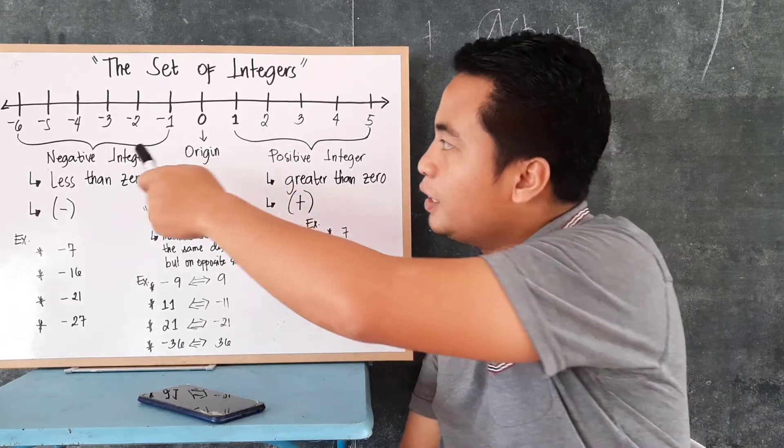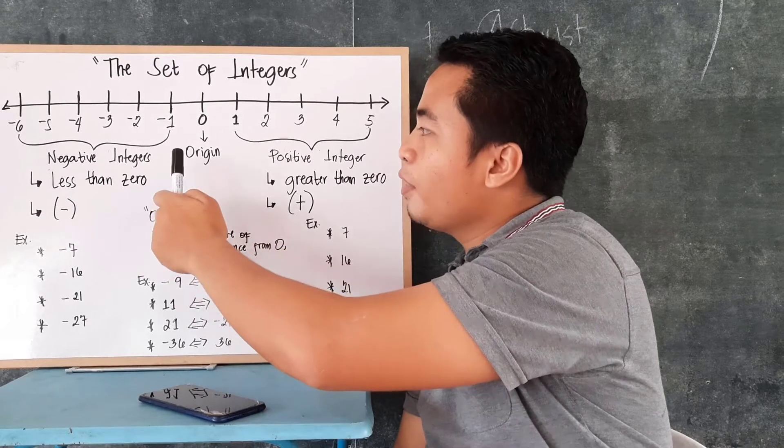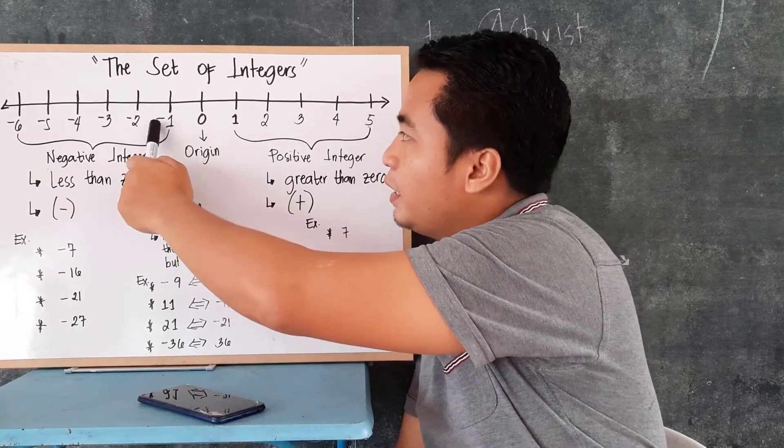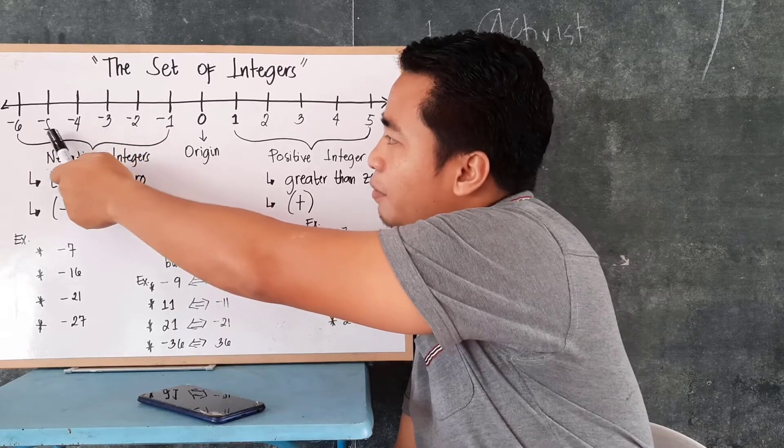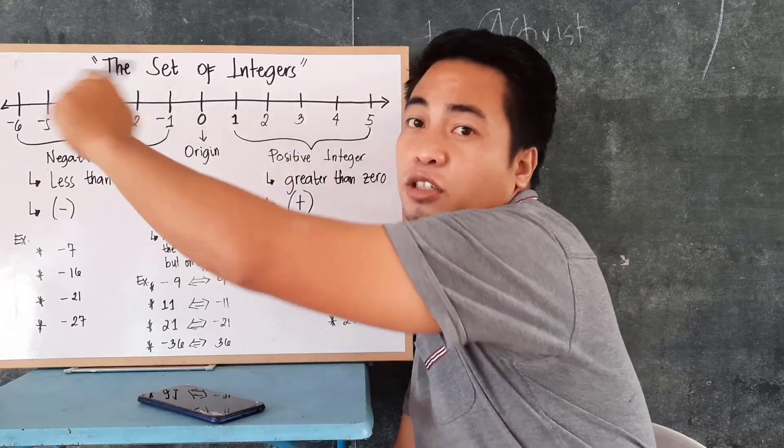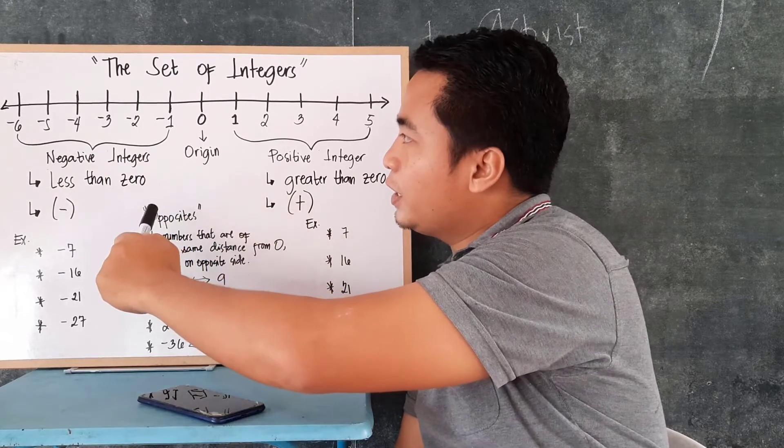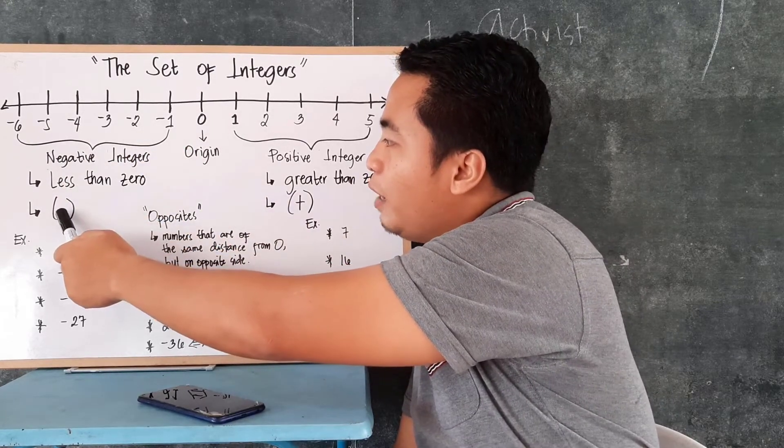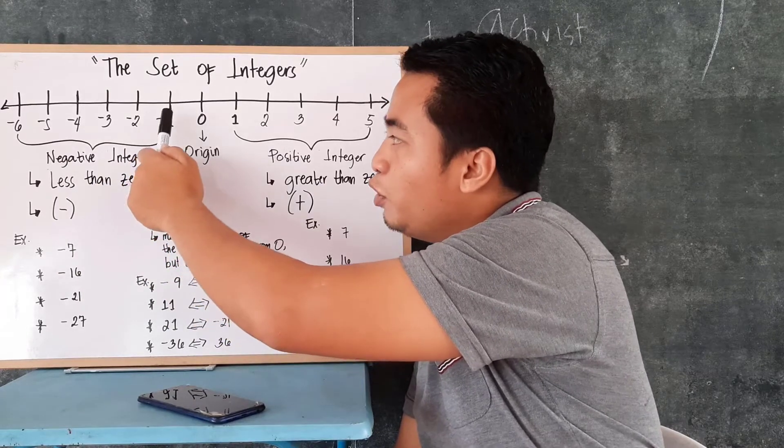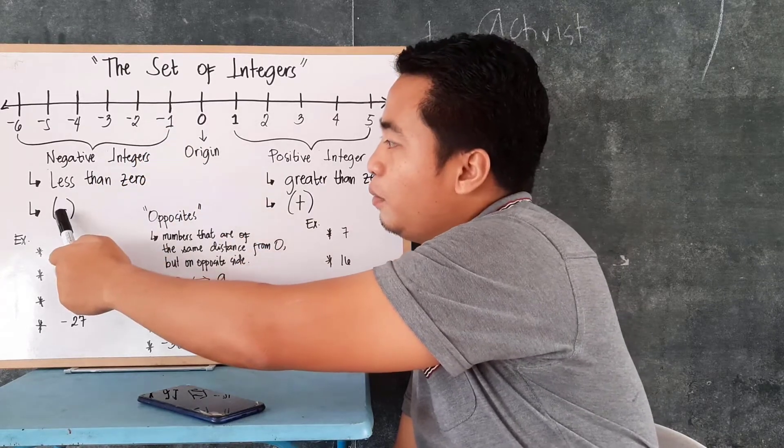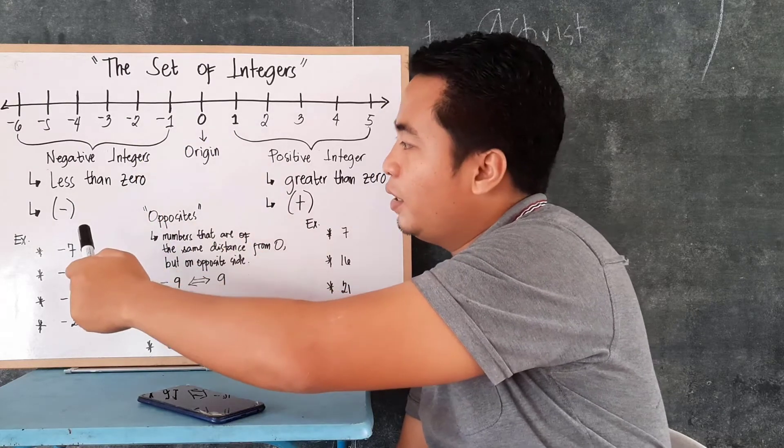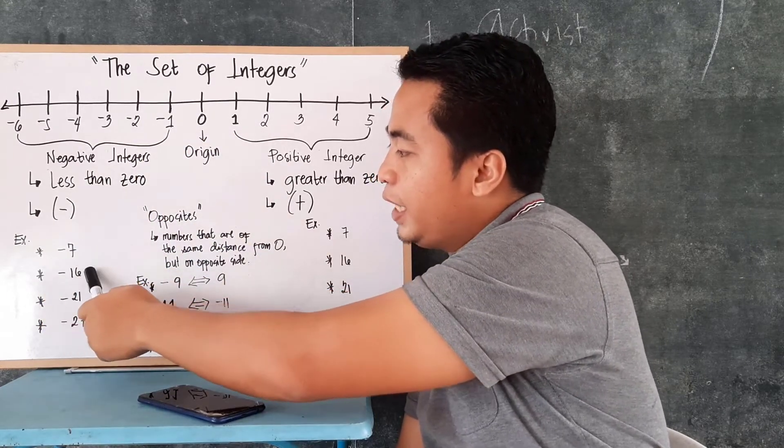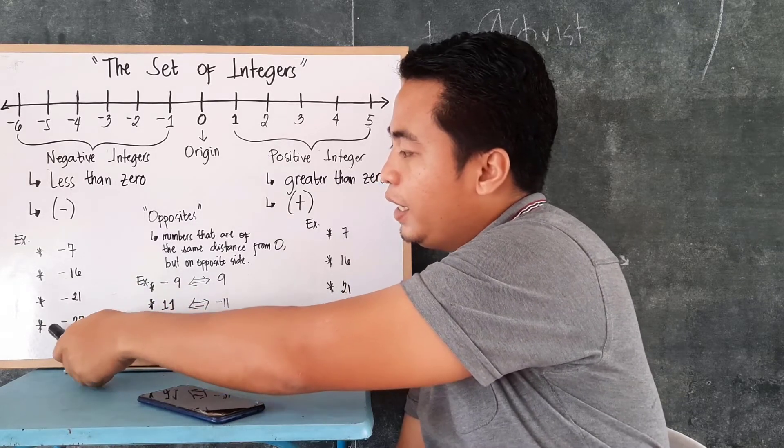And on the other side, we have here negative integers, all numbers less than 0, like negative 1, negative 2, negative 3, negative 4, negative 5, negative 6, and so on. They are negative integers. And it's always that we need to denote them, put a simple negative sign beside that number. So, for example, negative 7, negative 16, negative 21, and negative 27.